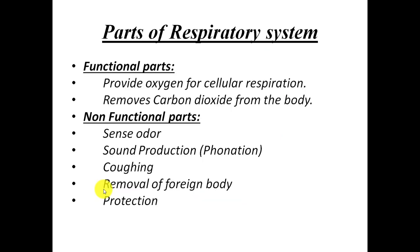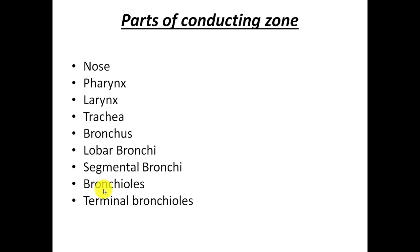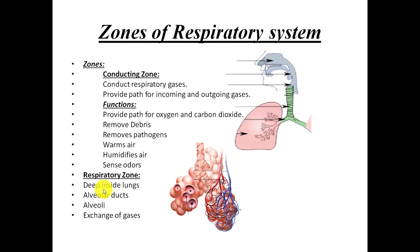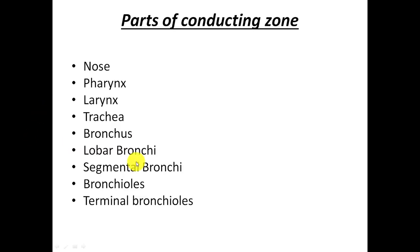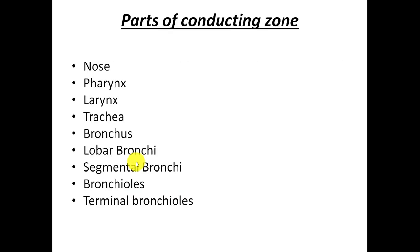The respiratory zone is where all gaseous exchange occurs, containing alveolar ducts and alveoli. To summarize: the respiratory system has functional and non-functional parts, and two zones — the conducting zone which carries gases, and the respiratory zone where exchange occurs between blood and alveoli. The parts of the conducting zone are the nose, pharynx, larynx, trachea, bronchus, lobar bronchi, segmental bronchi, bronchioles, and terminal bronchioles.